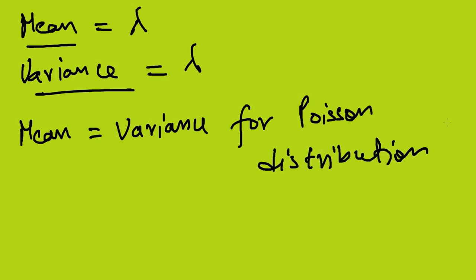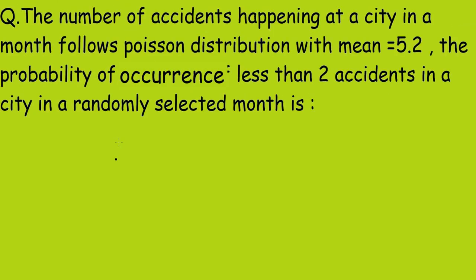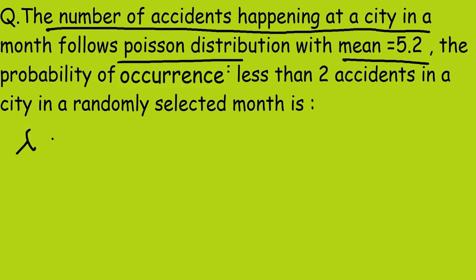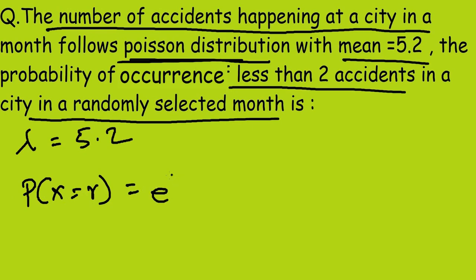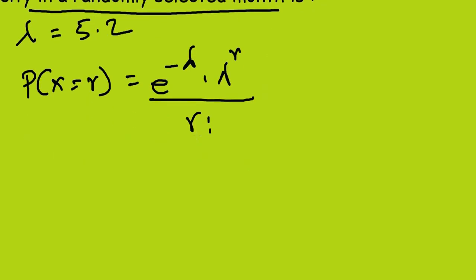Now we will solve a problem to better understand the distribution. The problem states: the number of accidents in a city in a month follows a Poisson distribution with mean equals 5.2, so lambda equals 5.2. We need to find the probability of occurrence of less than two accidents in a randomly selected month, i.e., P(X < 2).